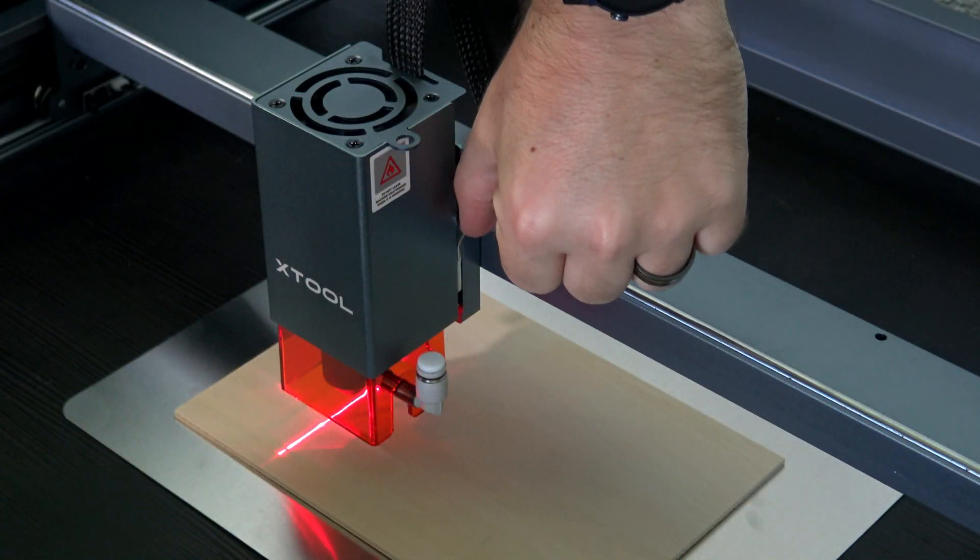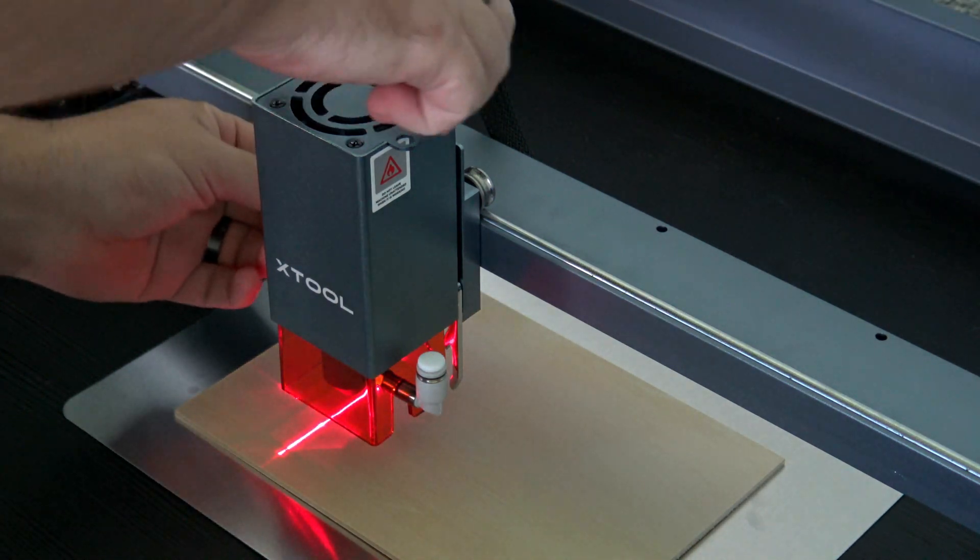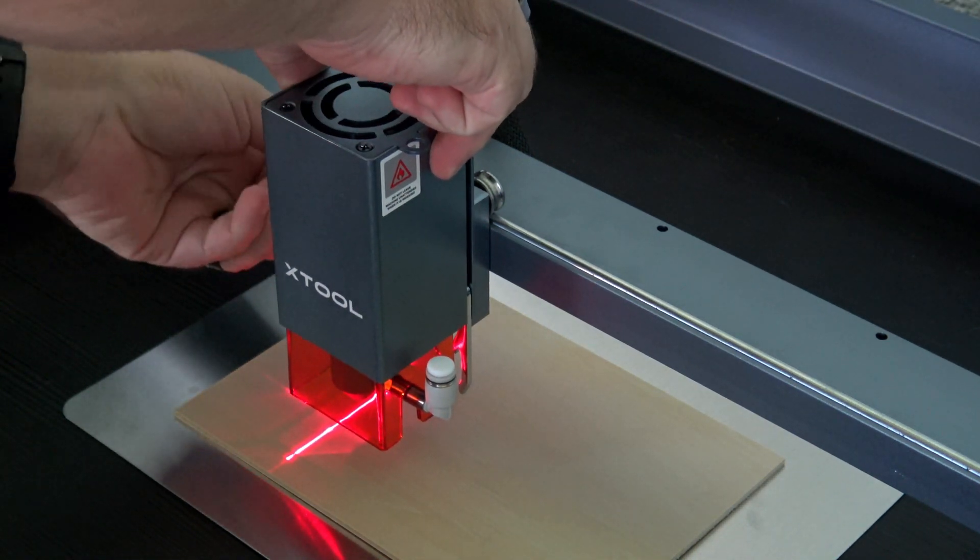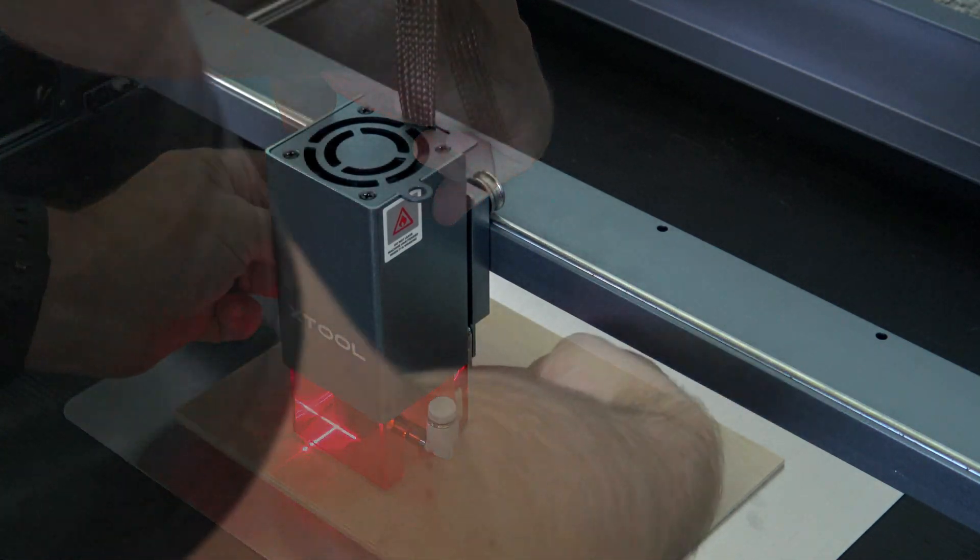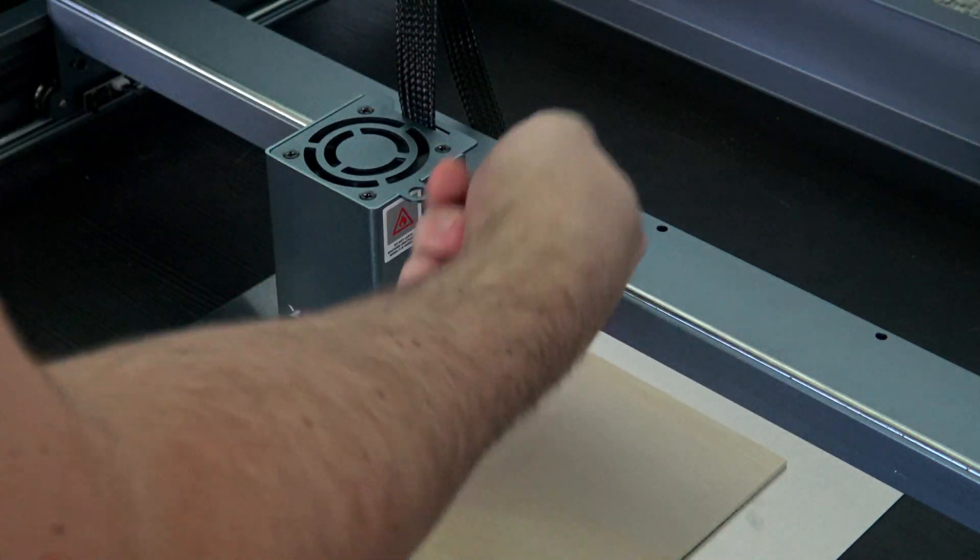Focus adjustment is done using the built-in lever. It flips down and magnetically locks into place. You then loosen the screw on the side, slide down the laser module until the lever rests on the material, and then tighten the screw. Flip the lever back up and you're ready to cut or engrave.